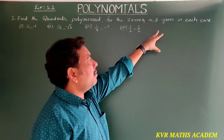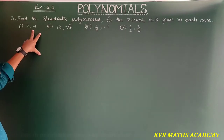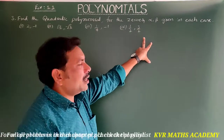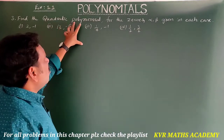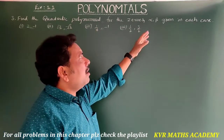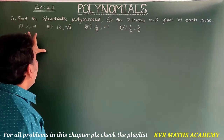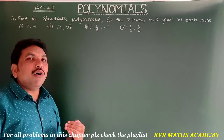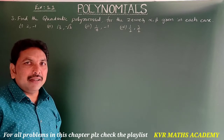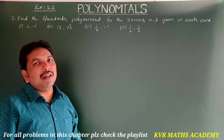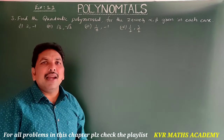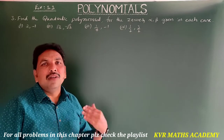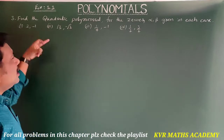The third question asks us to find the quadratic polynomial for zeros alpha and beta given in each case: (2, -1), (√3, -√3), (1/4, -1), and (1/2, 3/2). We know the quadratic polynomial with zeros alpha and beta is k into x² minus (alpha + beta)x plus alpha·beta.